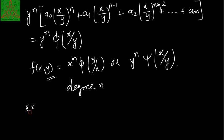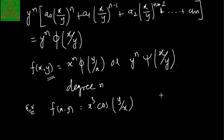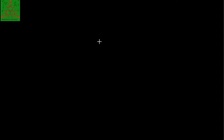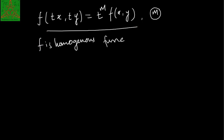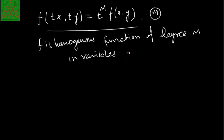For example, if we are given f(x,y) = x³cos(y/x), that is a homogeneous function. There is another way to check whether a given function is homogeneous or not: by considering the expression f(tx, ty) = tᵐ·f(x,y). If this holds for any m, then we can say that f is a homogeneous function of degree m in variables x and y.